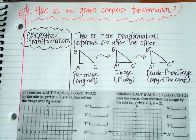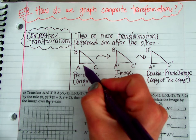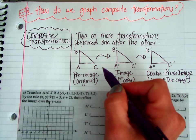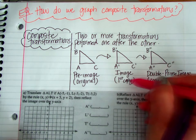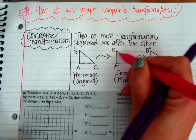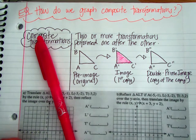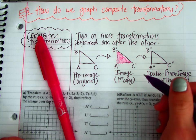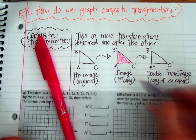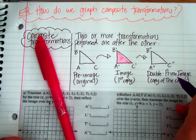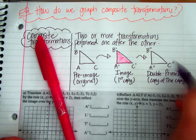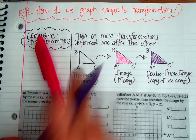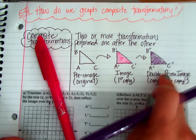We're always going to be starting with an original, which we call the pre-image. Then we perform a specific transformation — it could be a translation, reflection, or rotation — and create a first copy, or the image, which I'm going to color in pink. Then we're going to have a second transformation and get a copy of the copy, which we call a double prime image. The first image was the prime image, the second one is the double prime, and I'm going to color that in purple.